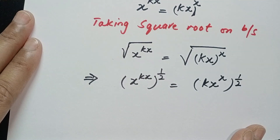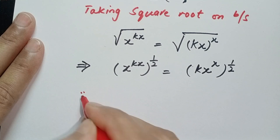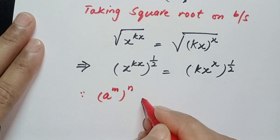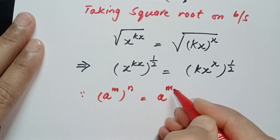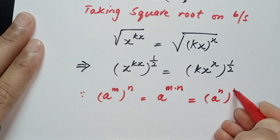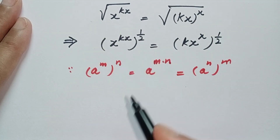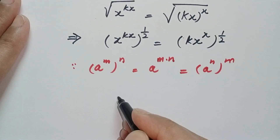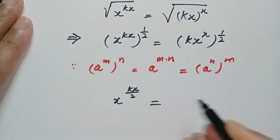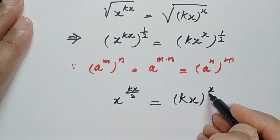Using the well-known property of exponents — if we have a to the power m, to the power n, we can write it as a to the power m times n — we apply this property and get: x to the power kx over 2 is equal to kx to the power x over 2.